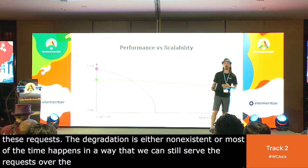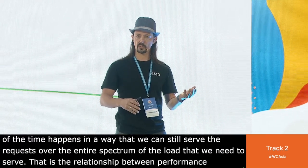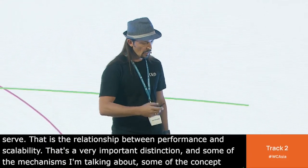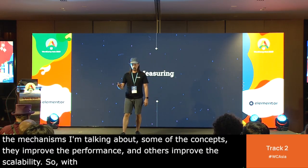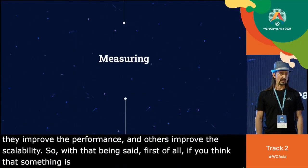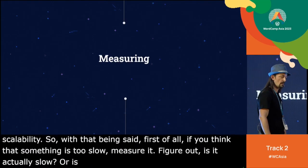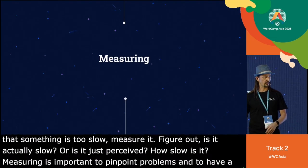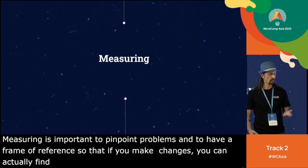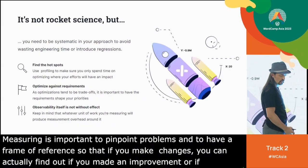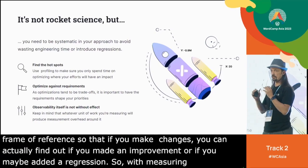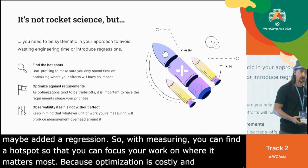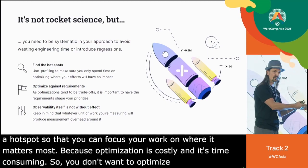That is the relationship between performance and scalability — a very important distinction. Some of the concepts I'm talking about improve performance, and others improve scalability. If you think something is too slow, measure it. Figure out if it's actually slow or just perceived, and how slow it is. Measuring is important to pinpoint problems and have a frame of reference so that if you make changes, you can find out if you made an improvement or added a regression. You can find the hotspots so you can focus on where it matters most, because optimization is costly and time-consuming.